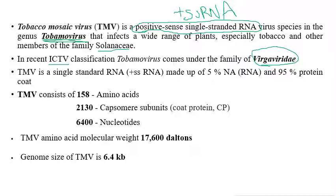TMV is a positive single-stranded RNA molecule composed of 5 percent nucleic acid and 95 percent protein coat. In general, plant viruses consist of 5 to 40 percent nucleic acid and 60 to 95 percent protein coat. TMV is an exception, consisting of only 5 percent nucleic acid and 95 percent protein coat.